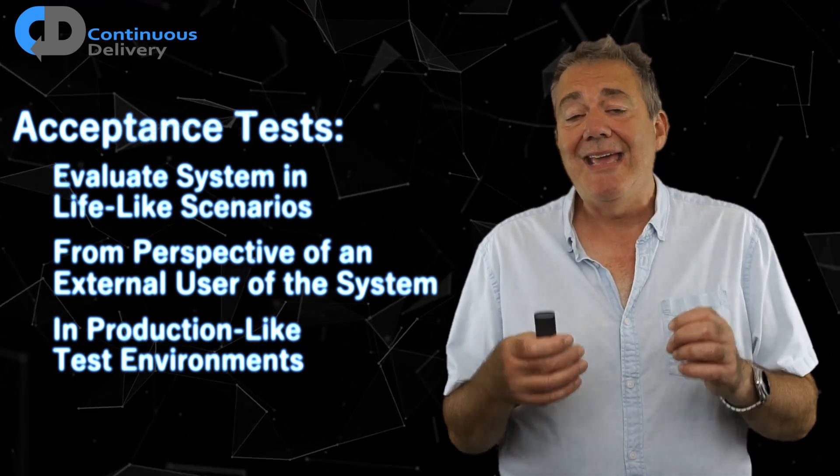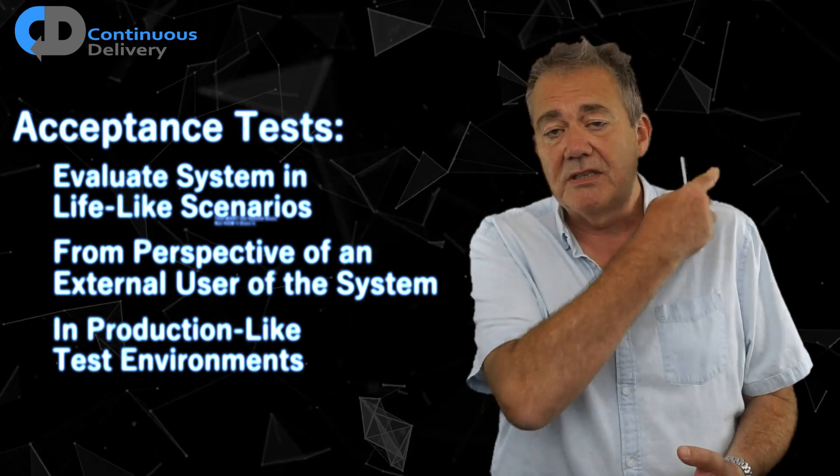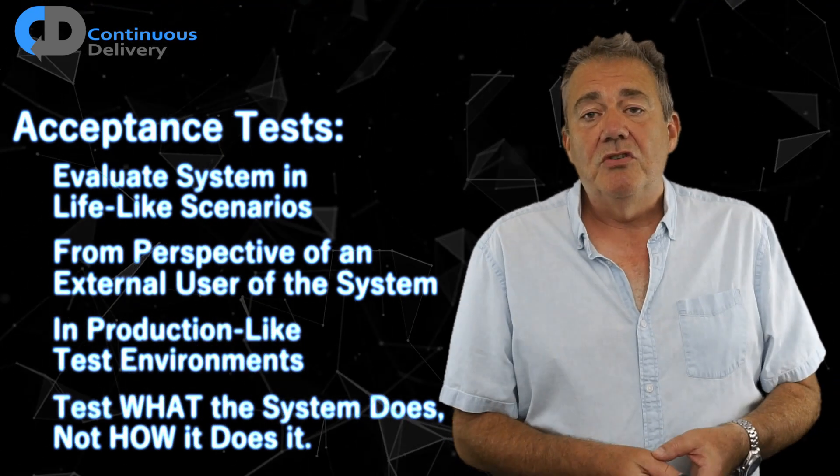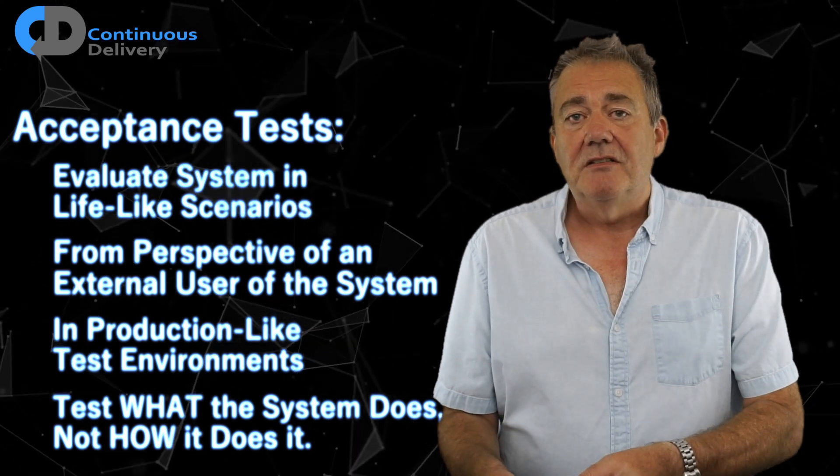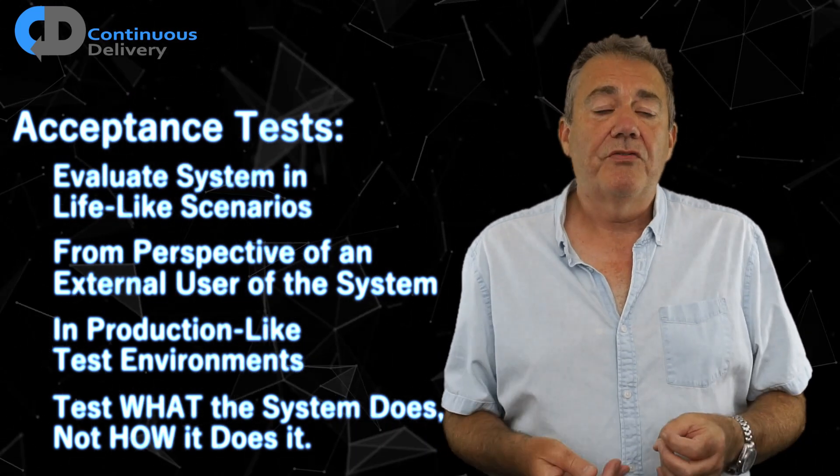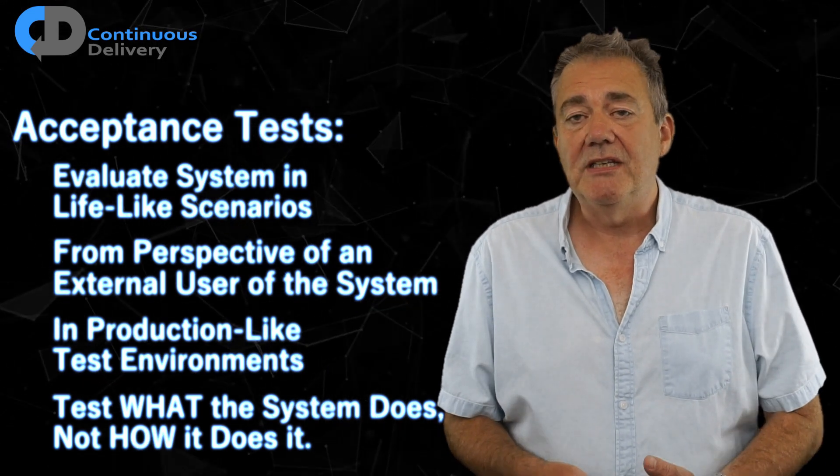I spoke about a key idea in this separation in an earlier video, which you can see here. Separating what the system should do from how it does it. But how do we achieve that? Let's walk through a simple example and look at this in a bit more detail than we did last time.